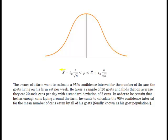Well, what he does have is he has the mean, doesn't he? We just said that he took a sample, a sample of 20 goats, found on average they ate 20 soda cans per day. That is X bar. We also said it had a standard deviation of two cans. That's S. We knew that he took the sample of 20 goats. That's his N.